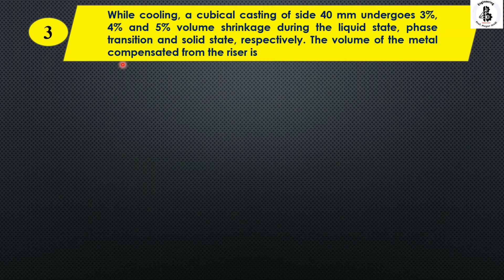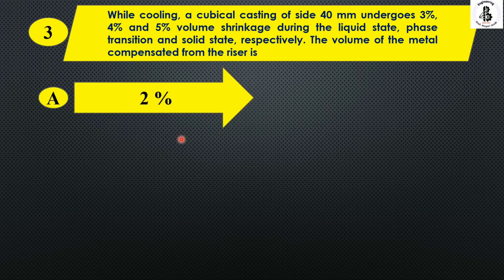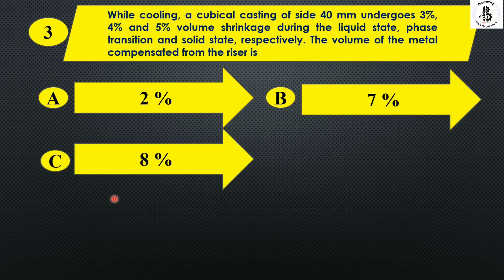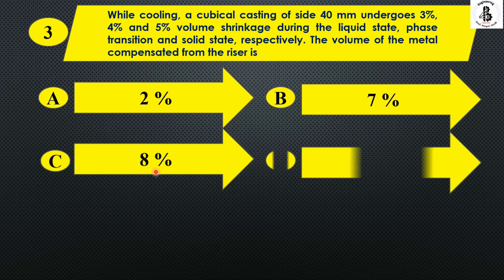While cooling, a cubical casting of size 40 mm undergoes 3%, 4%, and 5% volume shrinkage during the liquid state, the phase transitions, and the solid state respectively. The volume of metal compensated from the riser is: Option A 2%, Option B 7%, Option C 8%, and Option D 9%.